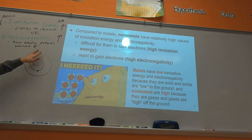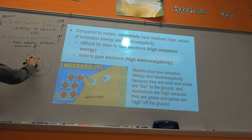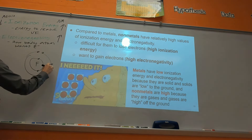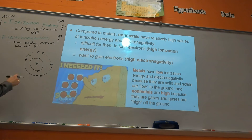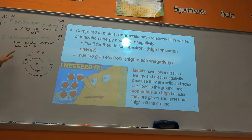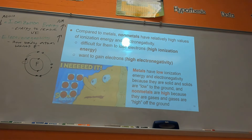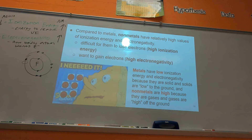Non-metals are the opposite. Fluorine has high ionization energy and high electronegativity because if it could get one more electron it would have a full outside shell and be stable. A way to remember it: metals in solid form are low to the ground, non-metals are gases and gases are high off the ground.